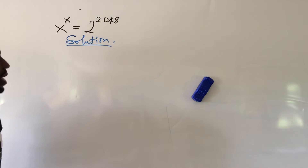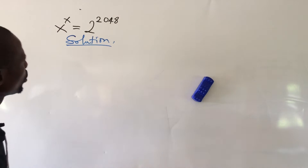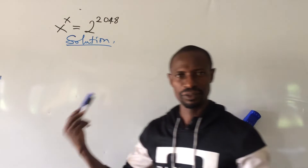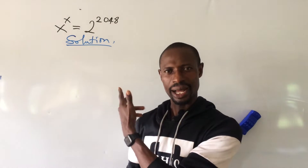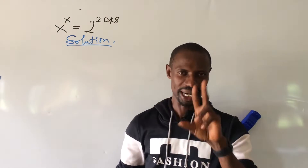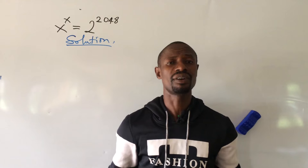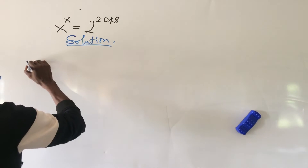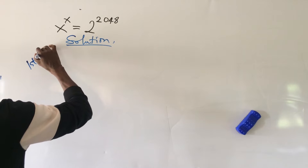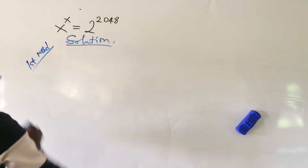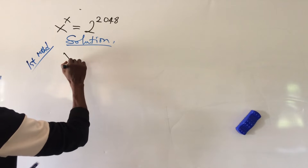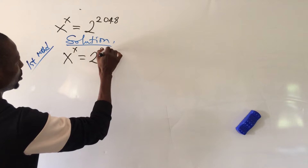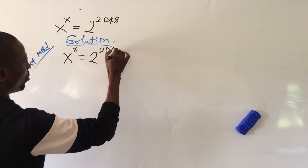The question is: x to the power of x equals 2 to the power of 2048. I have three methods I can apply in solving this and we arrive at the same answer, but for the sake of this video I'm going to use just two. Let's take the first method.